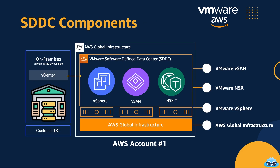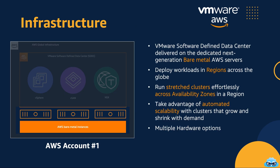Now, let's dive deep into the details of AWS account number one and its four main building blocks. In the foundational layer of AWS account number one, we find the infrastructure that powers VMware Cloud on AWS. At the core of this layer, we have dedicated bare metal AWS servers strategically deployed across specific AWS regions worldwide. These servers provide the robust foundation upon which VMware Cloud on AWS is built.